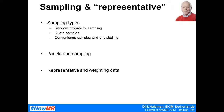Your sample should be representative — it should represent the research population. That means the distribution of entities in your sample should mimic the distribution of entities in the population. The proportion of women, old people, obese people, smart people, and people from urban areas in the sample should be identical to the distribution in the population, so you can say something meaningful about that population.